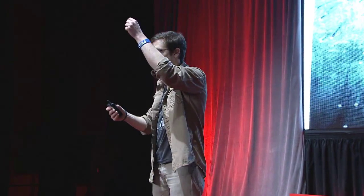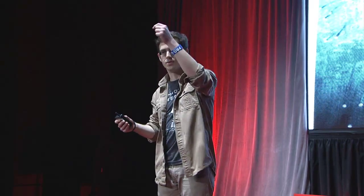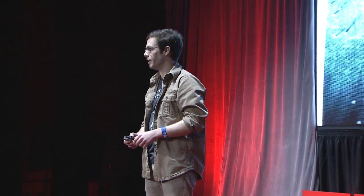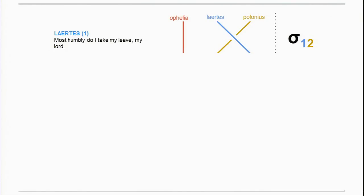And if strand one passes in front of both strand two and strand three, you get where I'm going. That probably looks pretty good in your mind — here's what it would look like on paper. This is a snippet from Shakespeare's Hamlet, and when Laertes, character one, talks to Polonius, character two, you not only get this crossing of strand one over strand two, you also get what mathematicians call a braid letter — a little sigma, one, two.